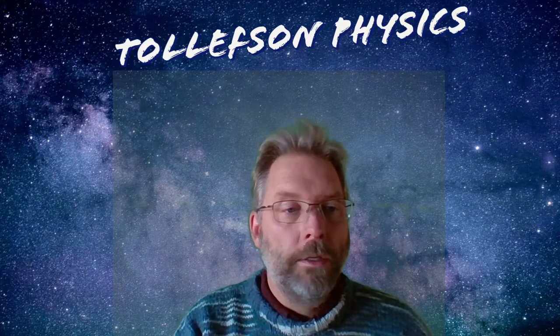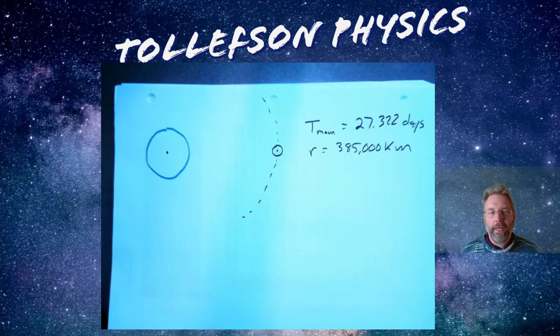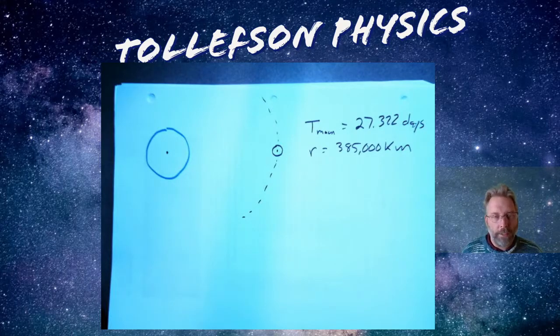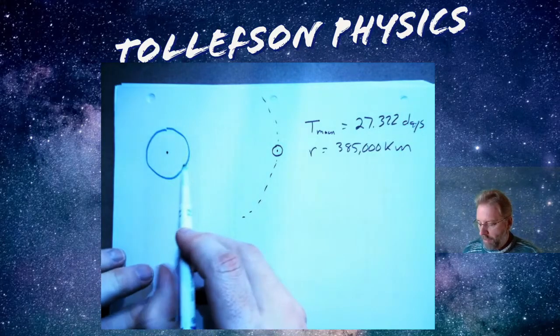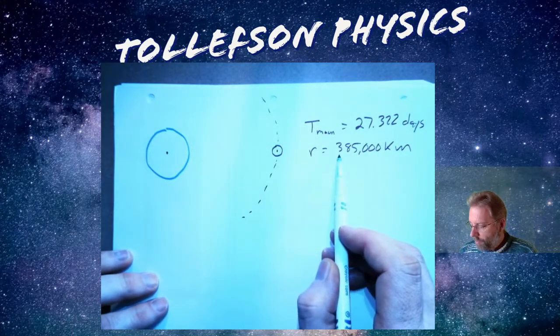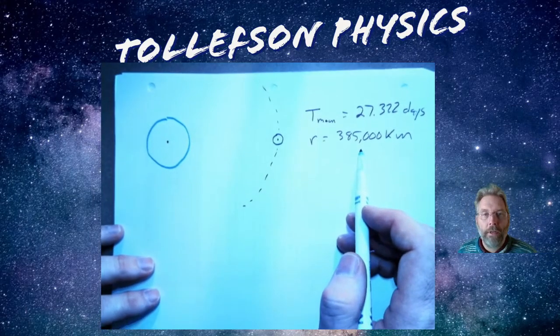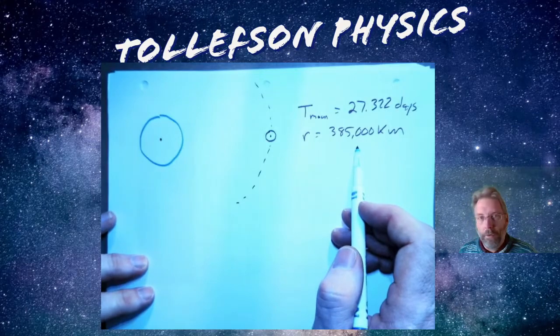We're going to use circular motion to figure that out. We're going to use the idea of universal gravitation to figure that out. So here's a bad drawing of earth and the moon and the moon is 385,000 kilometers away. You can measure that. There's several ways to measure that.